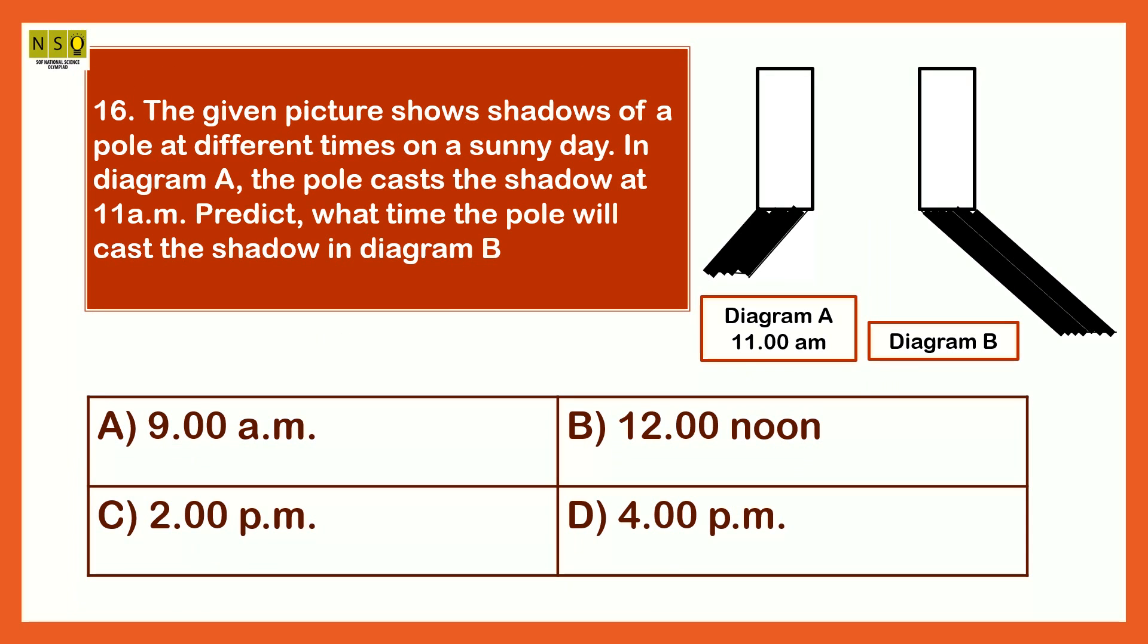The given picture shows shadows of a pole at different times on a sunny day. In diagram A, the pole cast the shadow at 11 a.m. Predict what time the pole will cast the shadow in diagram B. The options are 9 a.m., 12 noon, 2 p.m., 4 p.m. The answer is 4 p.m.